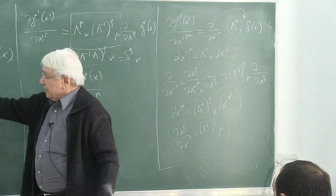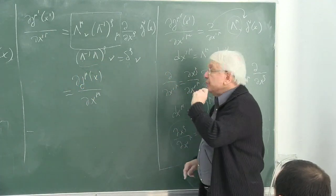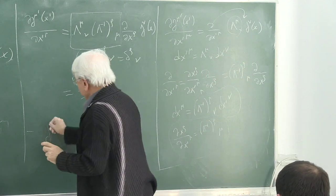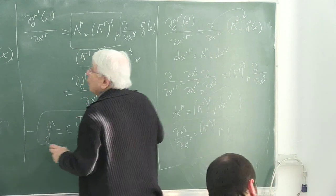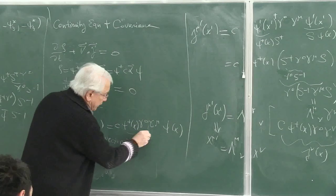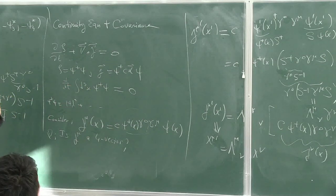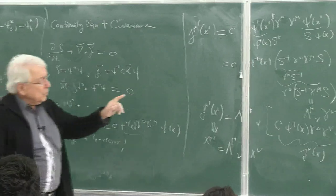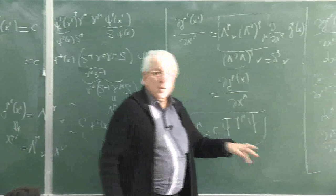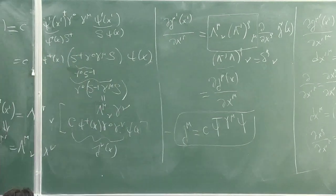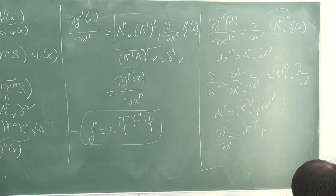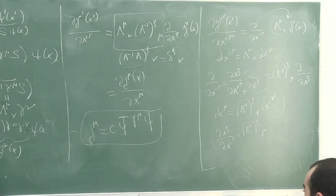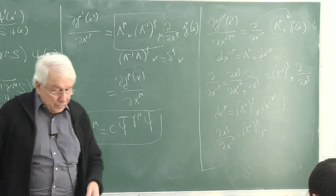So with the definition of psi-bar, j-mu has the simpler form c times psi-bar gamma-mu psi. This combines psi-dagger and gamma-zero into psi-bar. This four-current transforms like a four-vector. These are called vector currents and are used heavily in the construction of actions and interactions in quantum field theory.